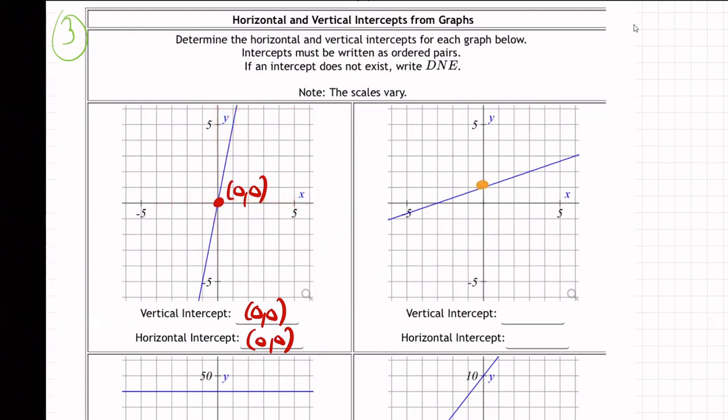Now, the next one hits here on the vertical. So what's that point? That's over zero, up one, right? It's one, two, three, four, five. So that's over zero, up one.